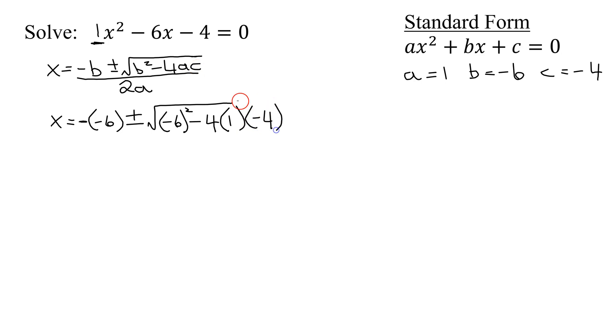a is 1 and c is negative 4. That is all under the radical. And then that whole thing is divided by 2 times a. And what's a? 1.